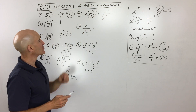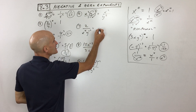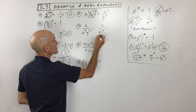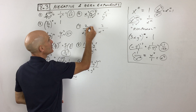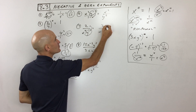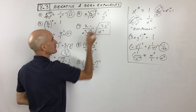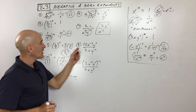Number 7 follows the same pattern: we have 2, x to the 4th in the numerator, and y to the negative 3rd. Take the reciprocal — move y to the negative 3rd up to the numerator as y to the positive 3rd.